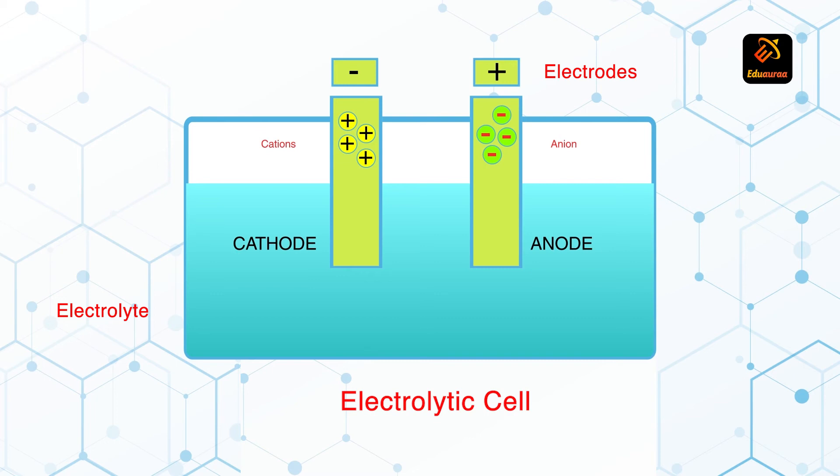Let us discuss more about these two. Anode is connected to the positive terminal of the electric source. The electric source is the battery from which electricity is supplied. It has two terminals, positive and negative. So to which terminal is the anode connected? To the positive.